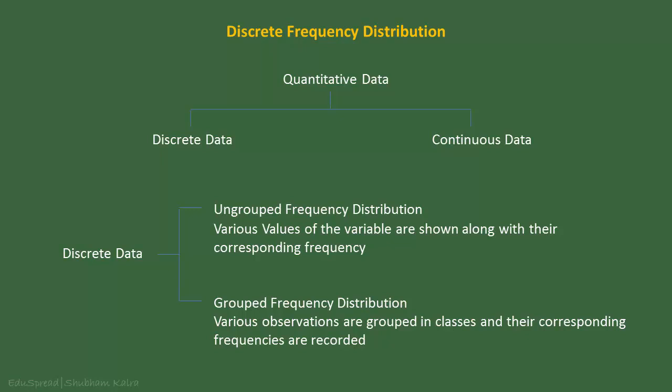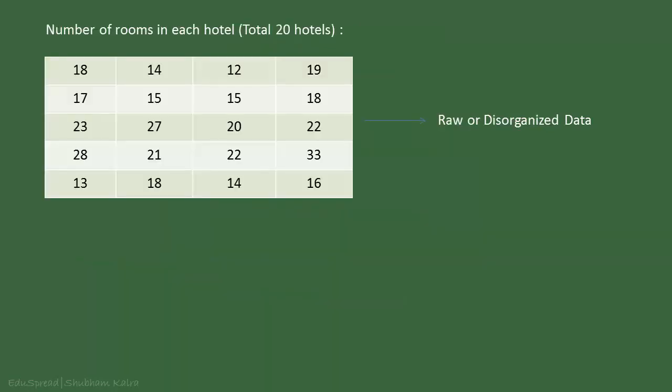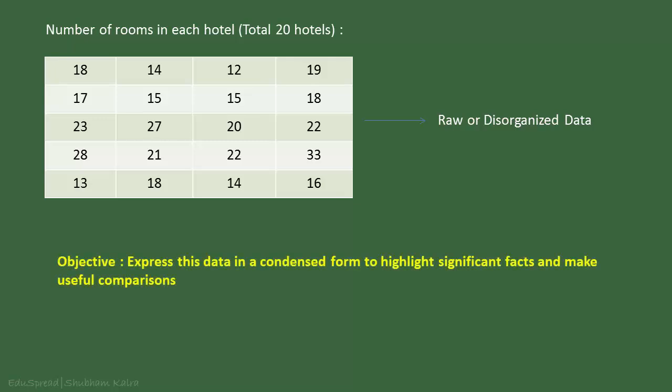Let's take an example to understand this in detail. Suppose that a survey of 20 hotels was conducted and the number of rooms in each hotel was recorded as shown below. The data in this form is called raw or disorganized data. This data is scattered and does not give us any useful information and is rather confusing. Our objective here is to express this data in a condensed form so that we could highlight the significant facts and make useful comparisons.